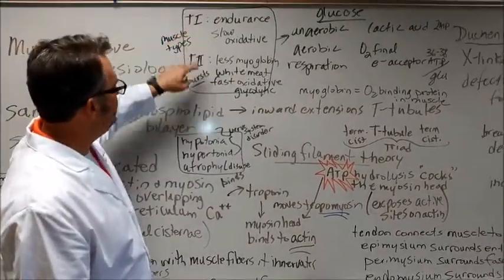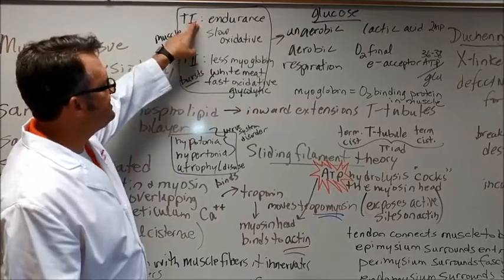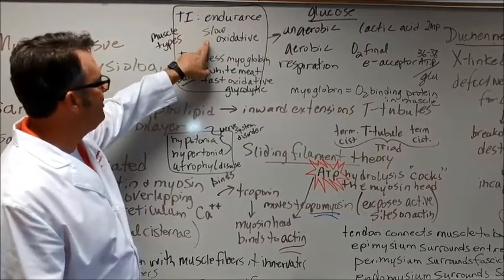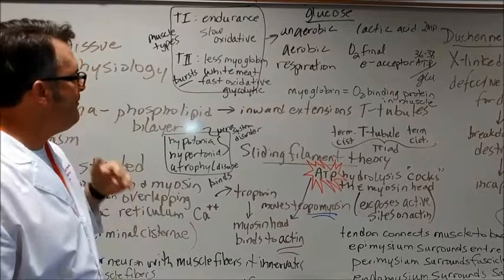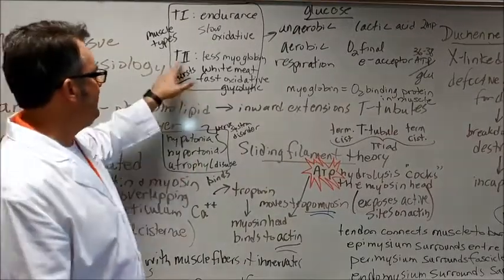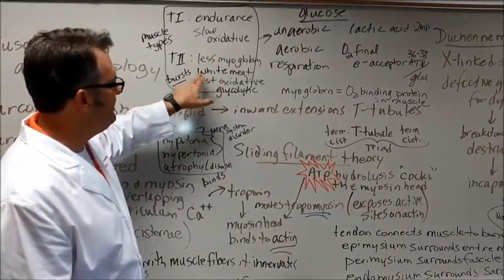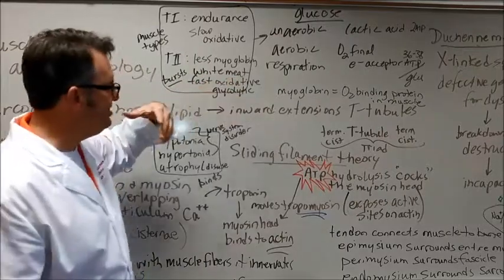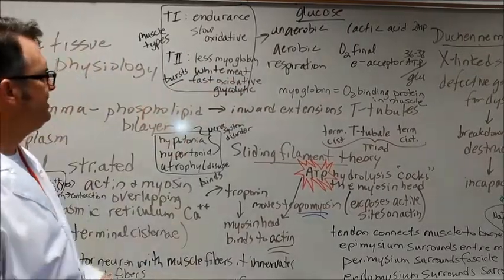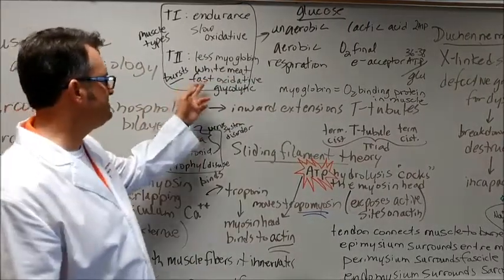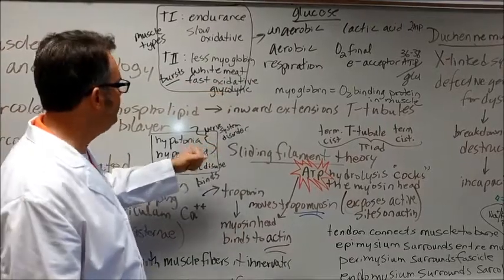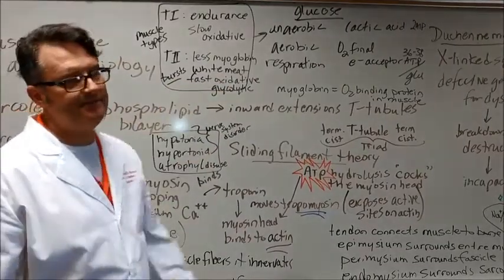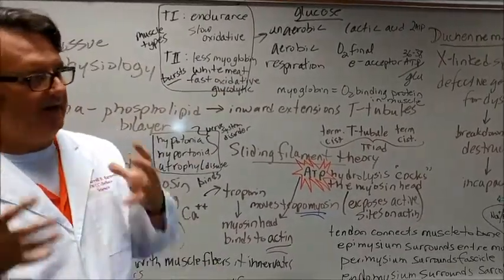Muscle types, type 1 and type 2. Type 1 muscle is an endurance muscle. It is called slow oxidative and it's going to have more myoglobin. Type 2 muscles have less myoglobin. These are considered like white meat. When you eat a chicken, this would be the lighter meat. These are also called fast oxidative glycolytic muscle fibers. These are muscles that fire in bursts.